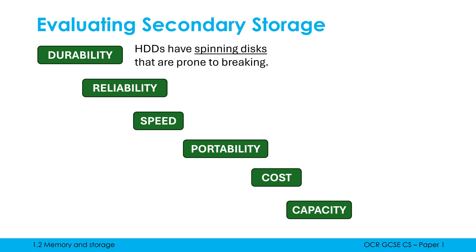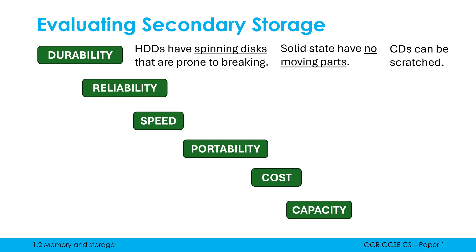Hard drives have spinning disks spinning really quite fast. Anything mechanical is more prone to breaking if dropped or bumped, so hard drives are not very durable. Solid state drives are generally fine if dropped because they have no moving parts. CDs and other optical disks are not very durable either — they can be scratched or affected by dust, which interferes with the laser reflection and means the binary data isn't read correctly.